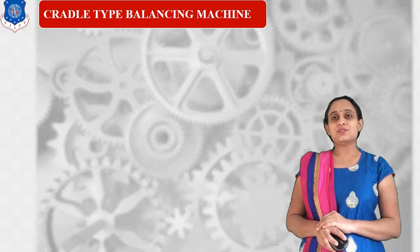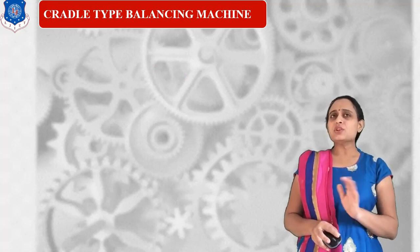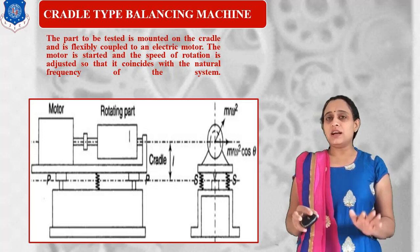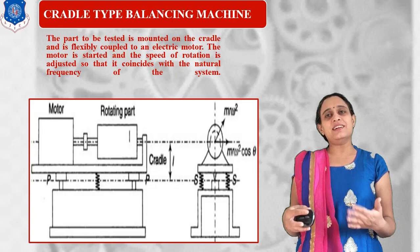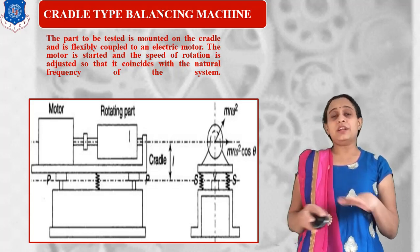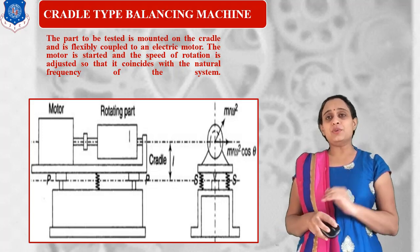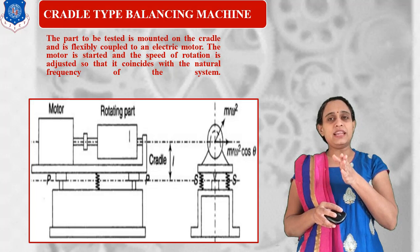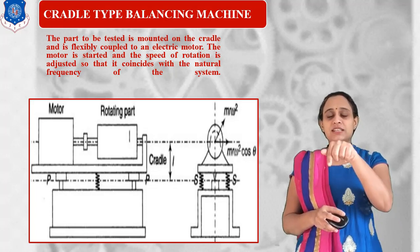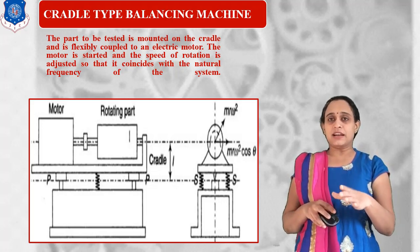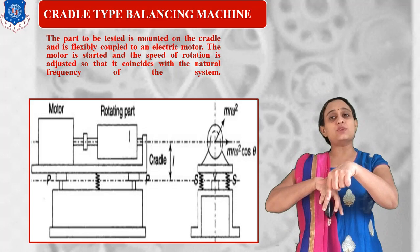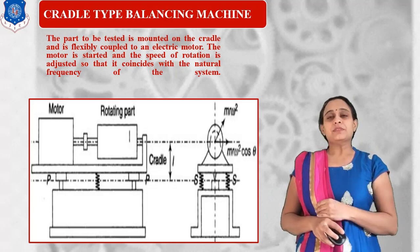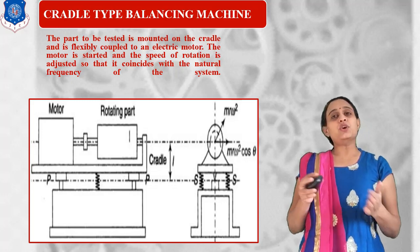Next is the cradle type balancing machine. Here, the motor and the rotating part are both mounted on a cradle — hence the name cradle type balancing machine. This cradle is mounted on a foundation. Between the cradle and the foundation, we have two pivots as well as two springs. From the front view you see a single spring, but because of the width of the cradle there is also a spring at the back side, giving us two springs total as seen in the side view.